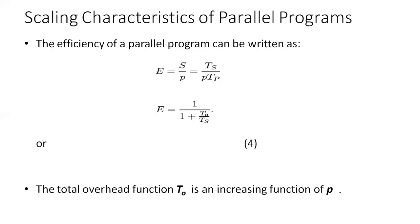The total overhead function T0 is an increasing function of P. This is because every program must contain some serial components. If the serial components of the program take time T_serial, then during this time all other processing elements must be idle. This corresponds to the total overhead function T0. The total overhead function T0 grows at least linearly with P. In addition, due to communication, idling, and excess computation, this function may grow super-linearly in the number of processing elements. As shown in the equation E = 1 / (1 + T0 / TS), this gives us several interesting insights into scaling of parallel programs.